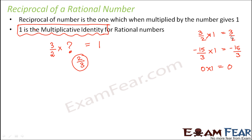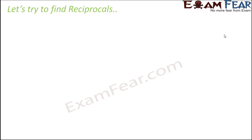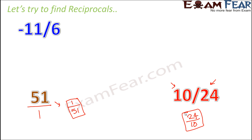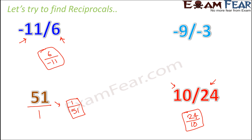Any number multiplied by 1 gives the same number, so 1 is called the multiplicative identity. The simple tip to find a reciprocal is to interchange the numerator and denominator. For example: reciprocal of 51 is 1/51; reciprocal of 10/24 is 24/10; reciprocal of minus 11/6 is 6 over minus 11; reciprocal of minus 9 over minus 3 is minus 3 over minus 9.